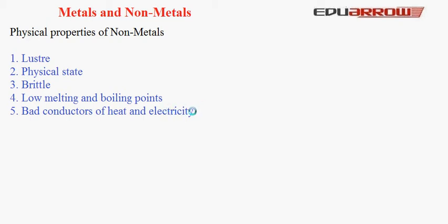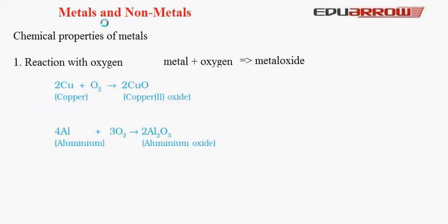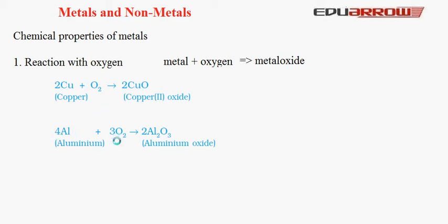Now let us study the chemical properties of metals. 1. Reaction with oxygen: Almost all metals react with oxygen to form metal oxide. The general reaction is: Metal + Oxygen → Metal Oxide. For example, copper reacts with oxygen to form copper oxide: 2Cu + O₂ → 2CuO. Another example: 4Al + 3O₂ → 2Al₂O₃ (aluminium oxide).